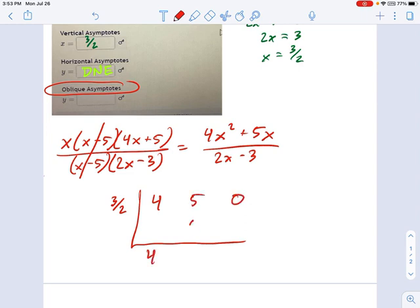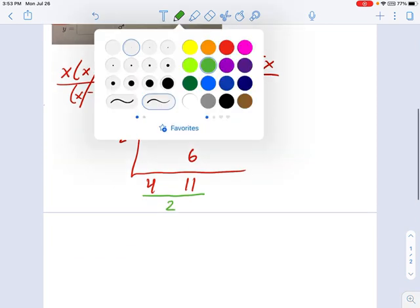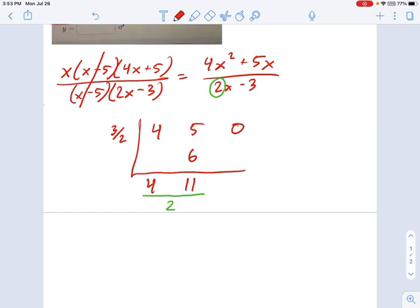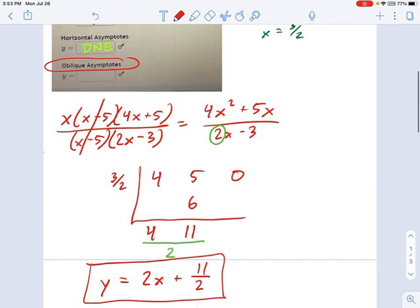So bring that down. This becomes pretty quick. I get 4X plus 11. Now we're not done yet because we have this factor of 2 right here. That factor of 2 has to be remembered as a division. Synthetic division is just a hack. So when you try to find the oblique asymptote, you have to remember, if there's a number in front of that denominator as a leading coefficient, you have to divide by that at the end. This becomes Y equals 2X plus 11 over 2. That is our answer to the oblique asymptote.